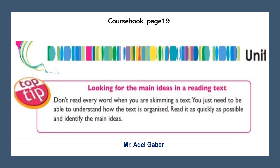Look at your course book page 19, top tip: Looking for the main ideas in a reading text. Don't read every word when you are skimming a text. You just need to be able to understand how the text is organized — read it as quickly as possible and identify the main ideas. Skimming means reading only parts of a text, for example the beginning and the end of a paragraph, in order to get an idea of how the text is organized. Skimming is an excellent pre-reading habit. When you do a detailed reading of a text after skimming it first, you will find that you read it more accurately and fluently.